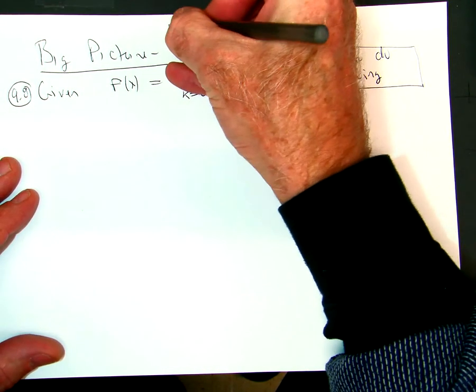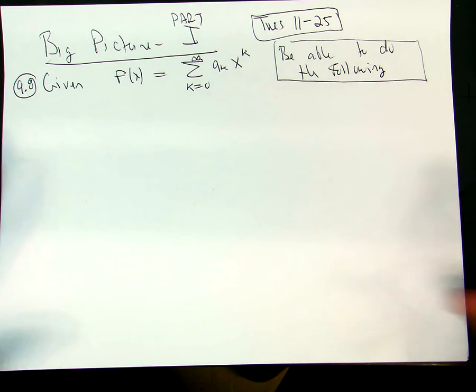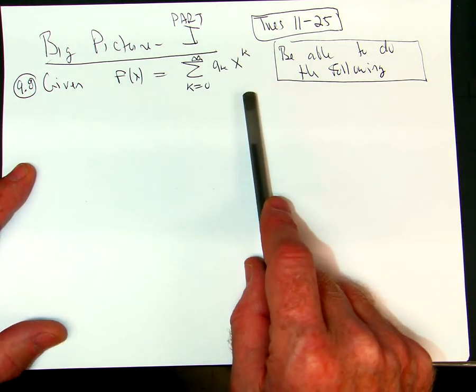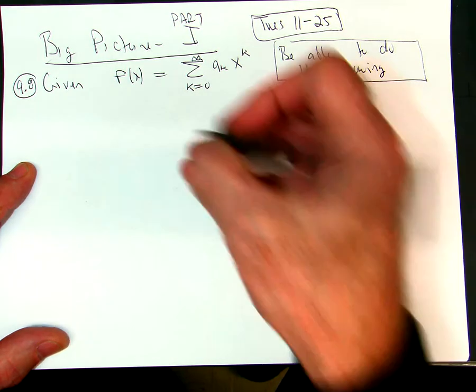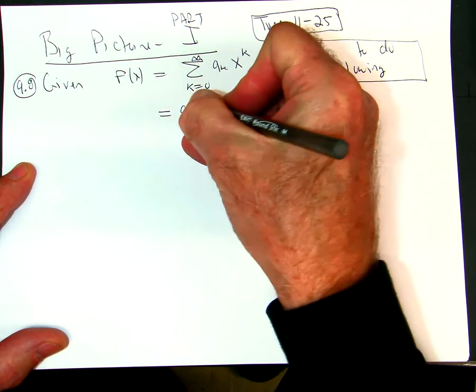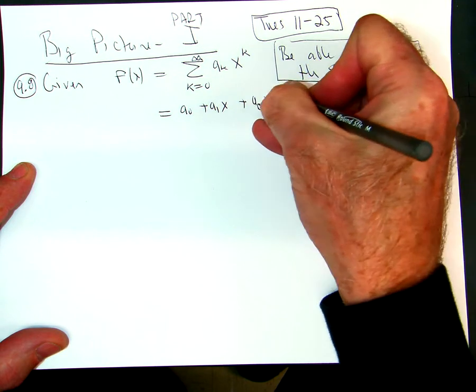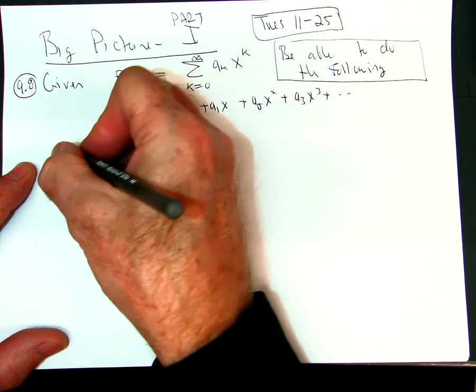The idea with power series - I'm trying to give you the big picture, and this is part one. This concerns section 9.8 but stuff that comes up elsewhere as well. Given a function f(x), be able to do the following. So we're given a function as a power series, in other words this thing is given in this weird fashion.